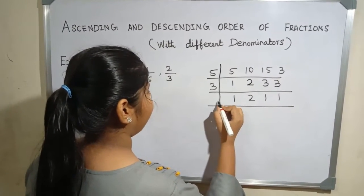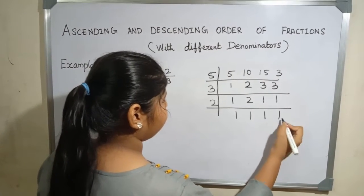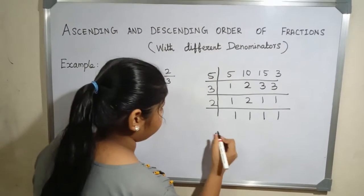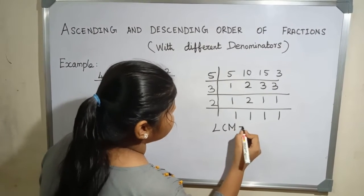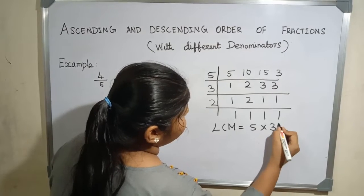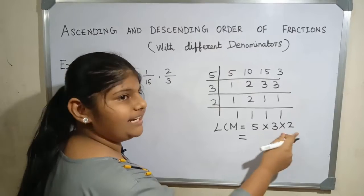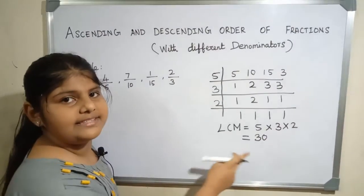Next, we will take 2. 2 1s are 2. Now we have to multiply all these numbers. The LCM is 5 multiplied 3 multiplied 2. 5 3s are 15, 15 2s are 30. The LCM is 30.